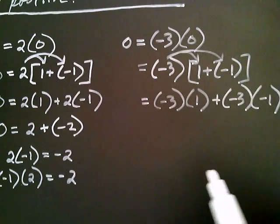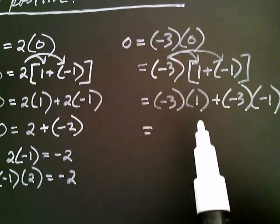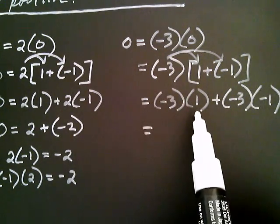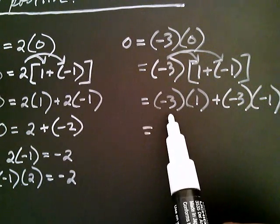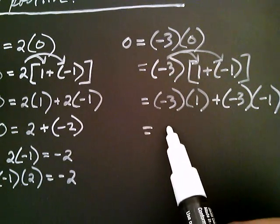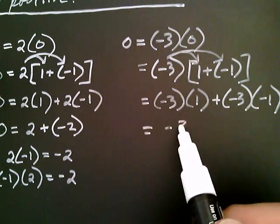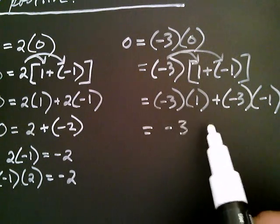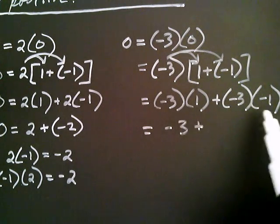Just like before, one times anything is always that number. So one times negative three is just negative three. And the question is: what is negative three times negative one?